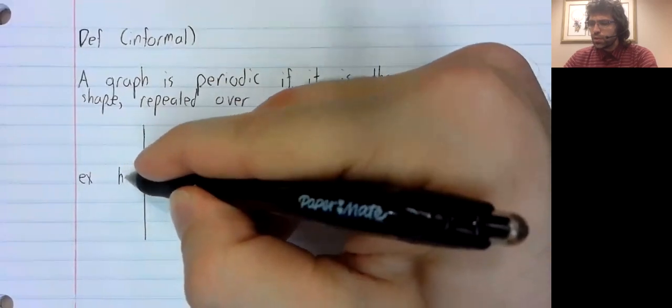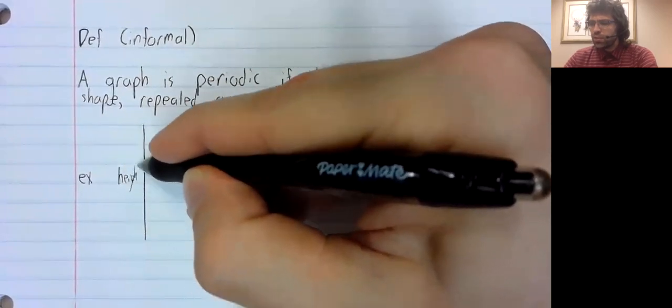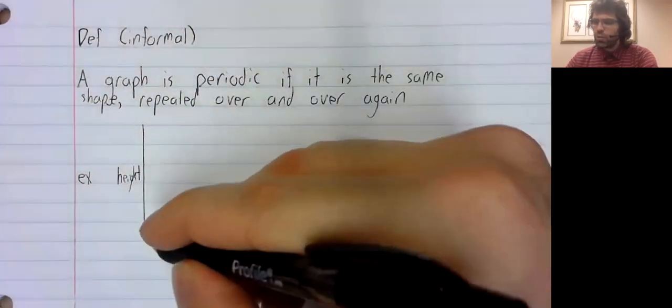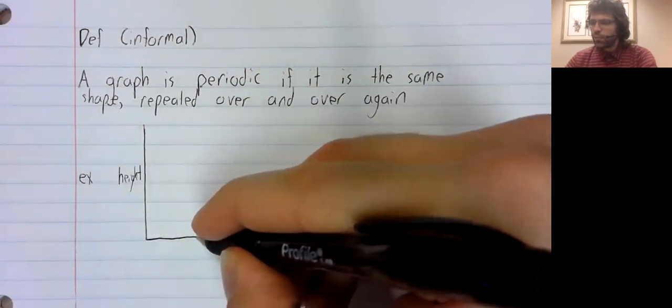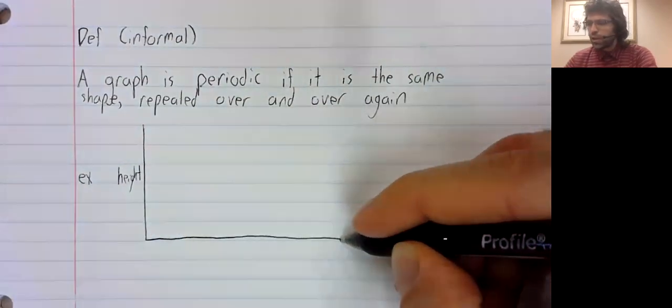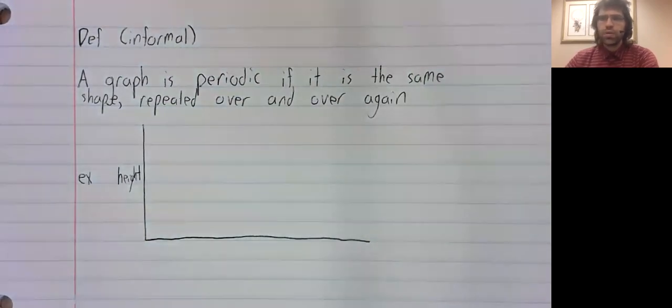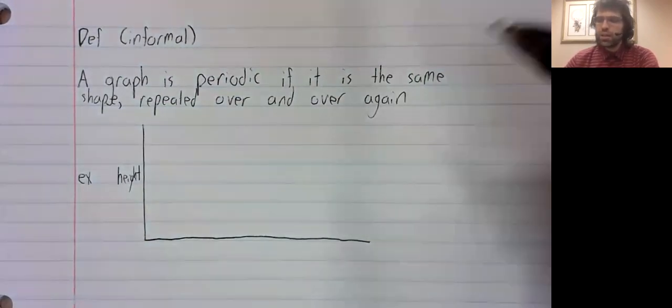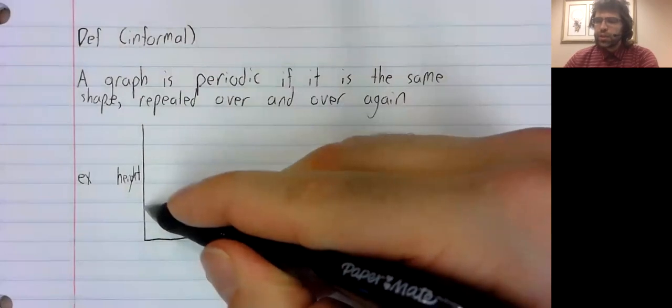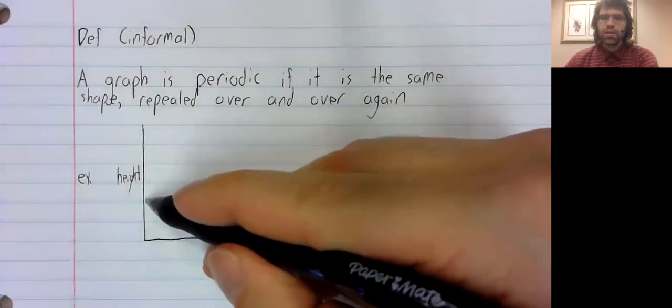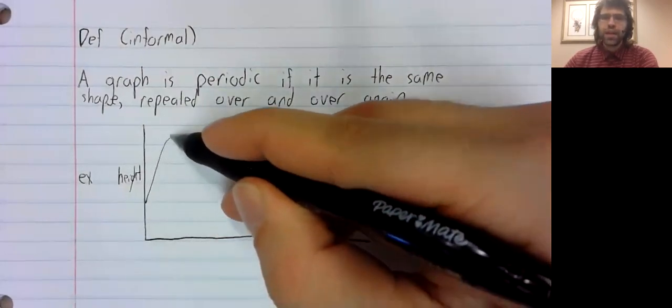For example, we might look at the waterline. We might look at the height of the ocean at a pier. Tides go up, tides go down.